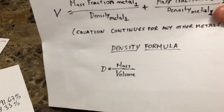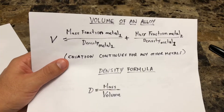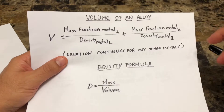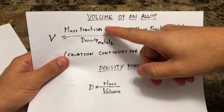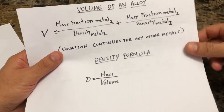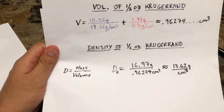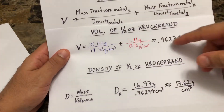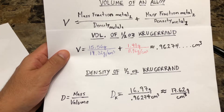We can use this formula for many other coins. For instance, if we were calculating the exact density for a Gold Eagle, we would simply add a third metal — silver — to the equation. So we would have gold as metal one, copper as metal two, and silver as metal three. It's a pretty straightforward formula: take the mass fraction of each metal, divide by its density, add them all up, and that gives the volume of the alloy.